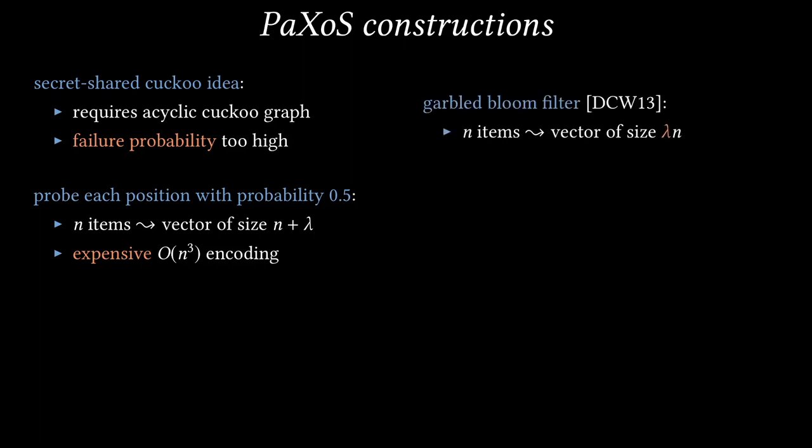In this work, we introduce a new Paxos scheme that we call garbled cuckoo tables. It has linear size and a linear time encoding procedure. In the next slide, I'd like to give you some of the main ideas behind this new Paxos data structure. We start with a simple secret shared cuckoo idea that I mentioned before, where each item is secret shared between two positions in the vector. As I mentioned earlier, we can't guarantee that the cuckoo graph will be free of cycles. This example has a cycle of length 3.